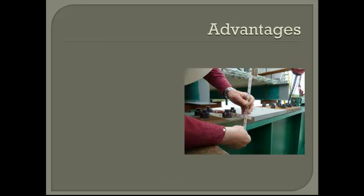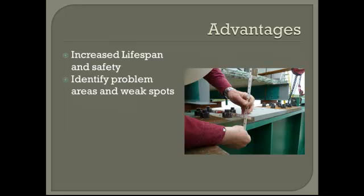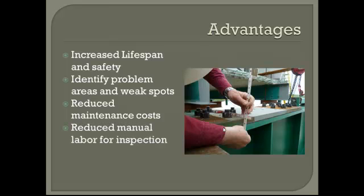Some advantages of a structural health monitoring system: it increases the lifespan and safety, identifies problem areas and weak spots, reduces maintenance costs, and reduces manual labor for inspection. Being able to identify problems can prevent the structure from failing catastrophically and improve safety. Identifying weak spots prevents members from yielding, fracturing, or buckling, and in turn reduces future repair costs. In larger buildings, the cost of labor to inspect for failure is dramatically decreased with a good structural health monitoring system.